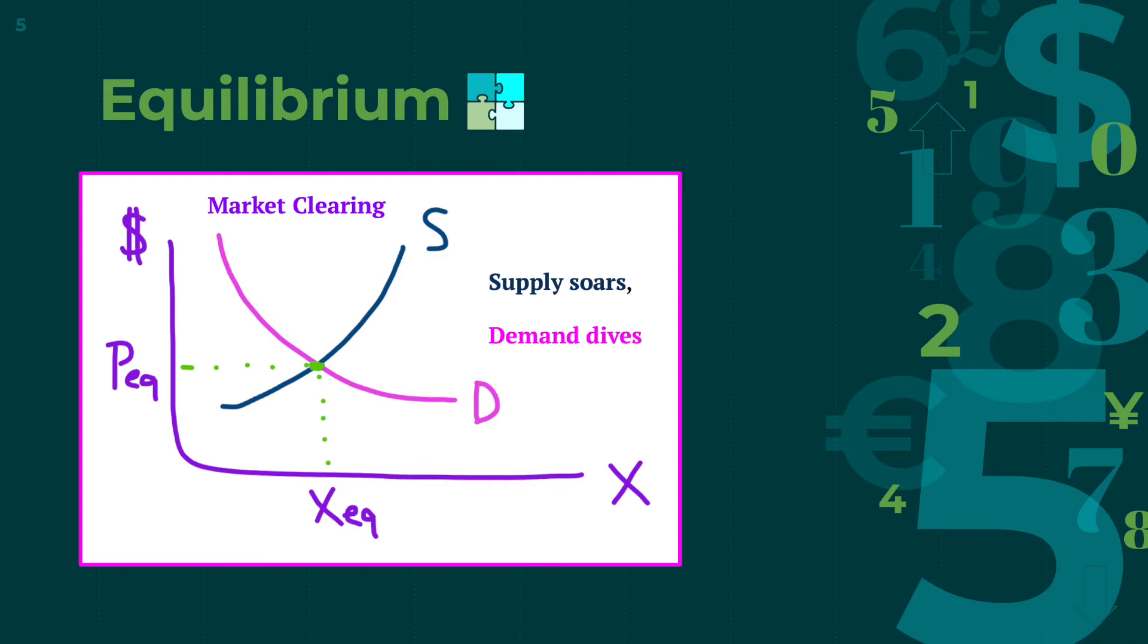In other words, where the amount of goods the producer produces equals the amount of goods the consumers buy. The price at which the goods are sold is called the equilibrium price, shown as PEQ, and the quantity at equilibrium is shown as XEQ. This phenomenon of supply equal to demand is called a market clearing.